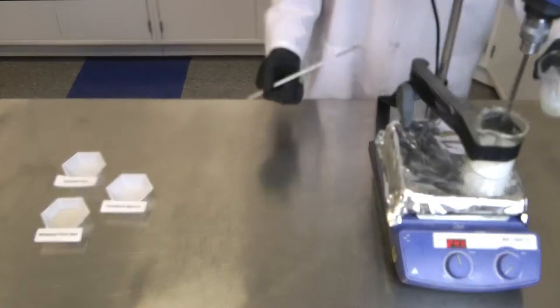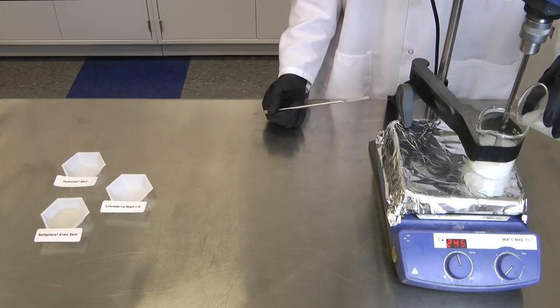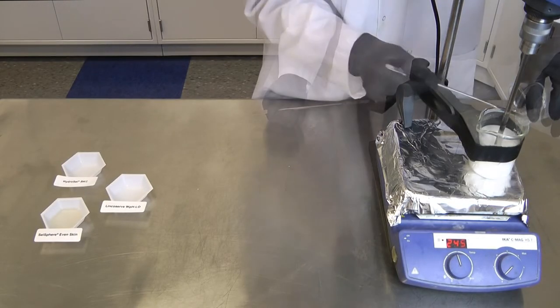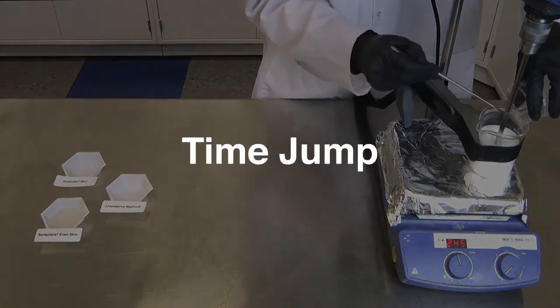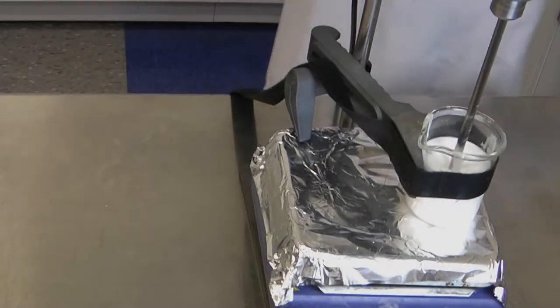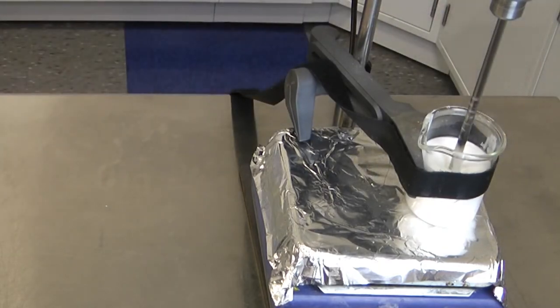Now that our oil phase and water phase are at temperature and both are completely uniform, we will begin to slowly add the oil to the water phase. Now that our oil and water phase are completely together, we will allow it to mix at temperature for about 10 to 15 minutes.